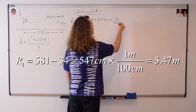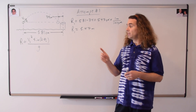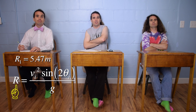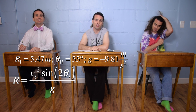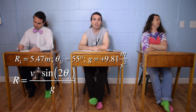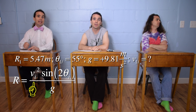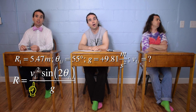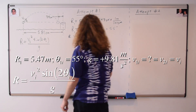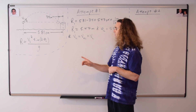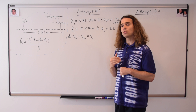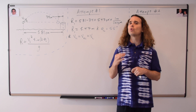Bobby, what is the only variable we do not currently know in the range equation for attempt number one? We know the first range is 5.47 meters, the first launch angle is 55 degrees, and the acceleration due to gravity is positive 9.81 meters per second squared, so the only variable we do not know is the magnitude of the initial velocity. And it's stated in the problem that the initial speed is the same for both throws. Correct — the only thing we do not know is the magnitude of the initial velocity. However, we do know that it is the same for both the first and the second attempts, so we're just going to label it as v sub i, the magnitude of the initial velocity, or the initial speed.